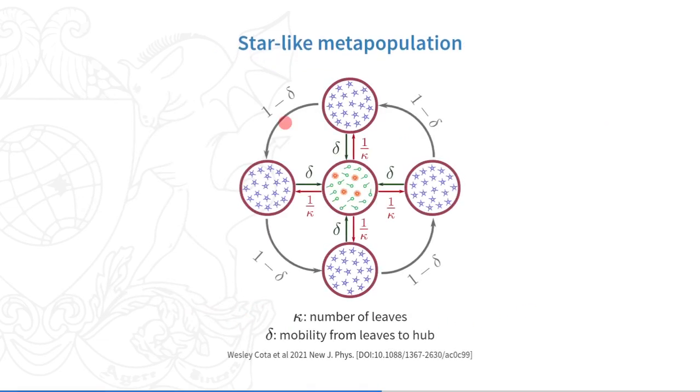Although the formalism can accommodate any arbitrary mobility network and connectivities, we restrict our analysis to synthetic star-like metapopulation networks, composed of hub and kappa leaves. Individuals travel from the leaves to the hub with probability delta, while residents of the hub visit the leaves uniformly.